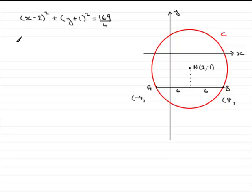So what I'm going to do is just simply say that when x equals, I'm going to take the 8 here. If I substitute this into the equation here I've got (8 minus 2)² plus (y plus 1)² equals 169 over 4.